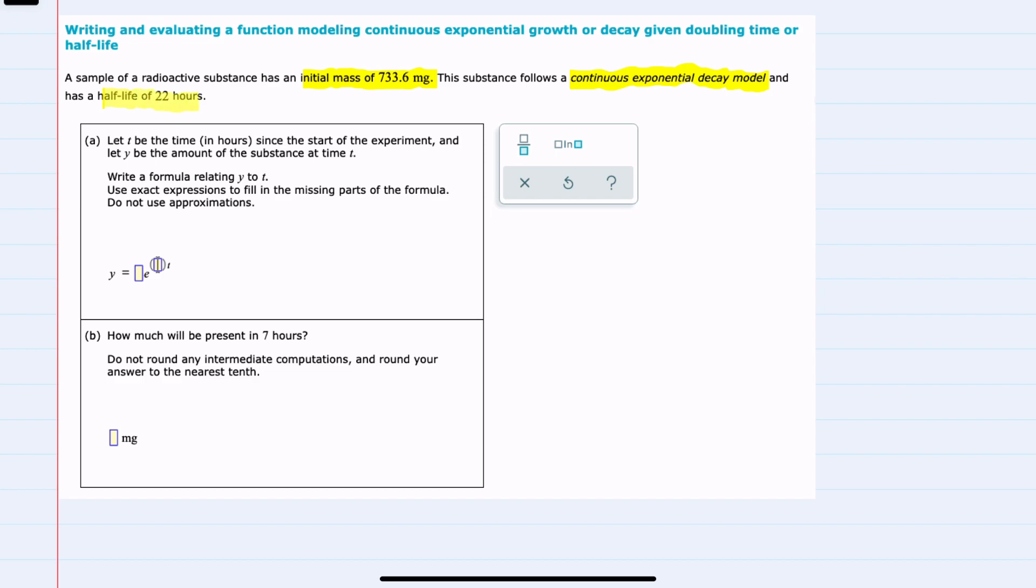The half-life is 22 hours. We'll start with our continuous growth and decay formula, which says that the amount of a substance will be equal to its initial amount times e raised to the rt, where r is the rate at which it decays, and t is the amount of elapsed time.